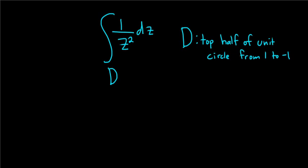We have a contour integral that we have to integrate where D is the top half of the unit circle from 1 to negative 1.